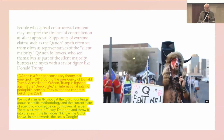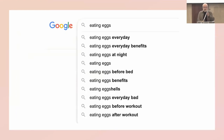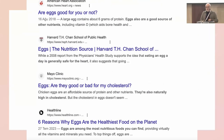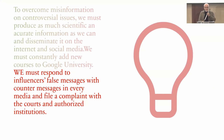We have to speak up and say the right things using scientific methodology and scientific knowledge about controversial topics. There is a saying in Turkey: 'do good and throw it into the sea — if the fish doesn't know, God knows.' In other words, the sea is Google — Google University. Now everybody graduates from Google University. You have to give more accurate information to Google University. We must produce as much scientific and accurate information as we can and disseminate it on the Internet and social media, constantly adding new content to Google University.